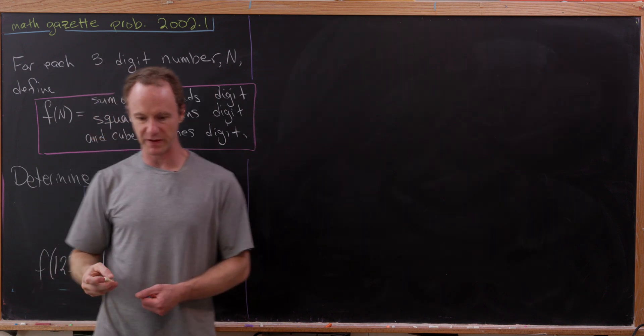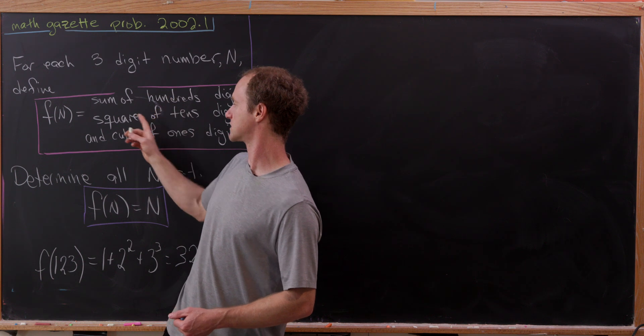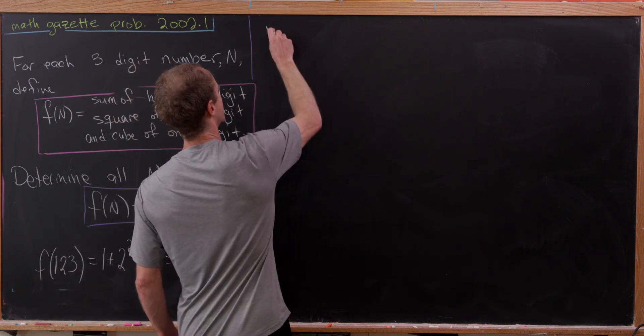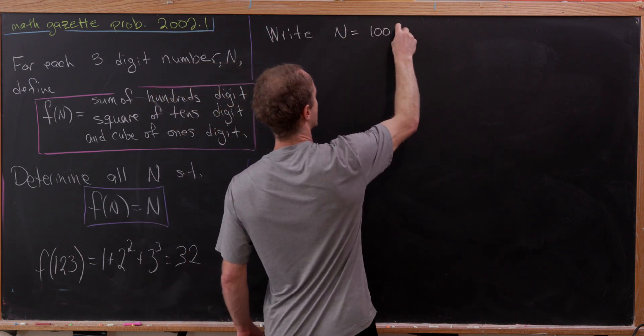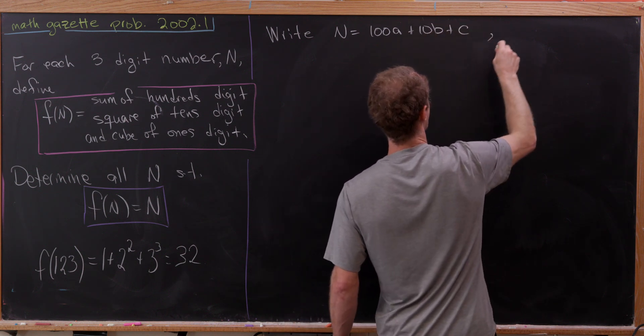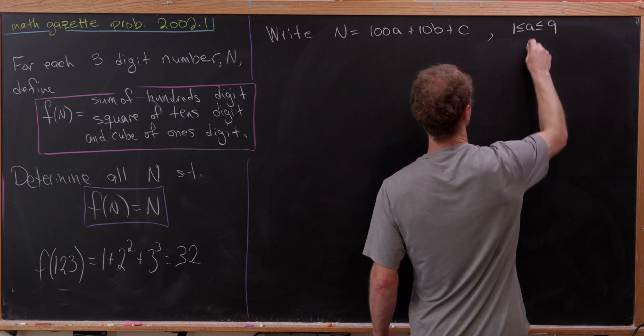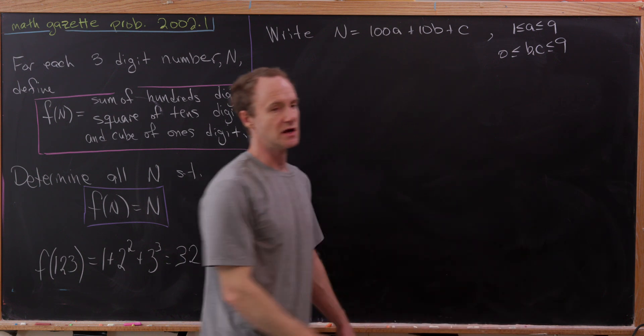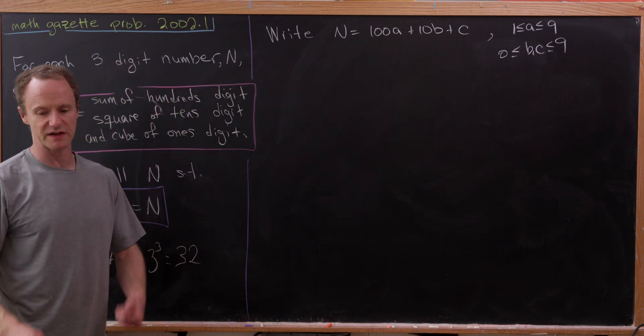Now jumping into the solution of our bigger problem, where we have a three-digit number and the sum of a number, a square, and a cube. We're going to start pretty similarly to what we did before. Let's write n as 100 times a plus 10 times b plus c. And here we have a is between 1 and 9, and then b and c are both between 0 and 9.